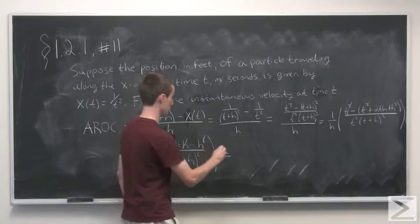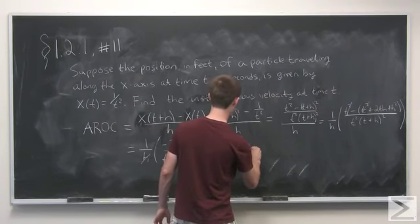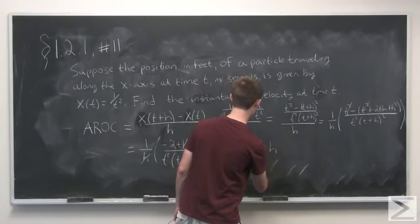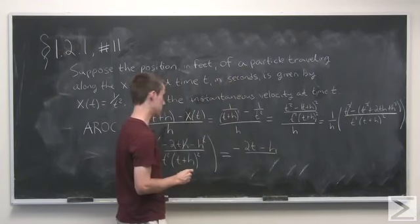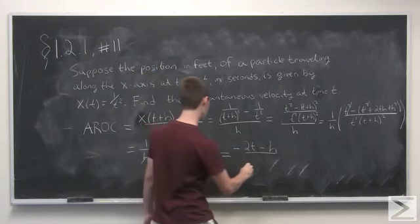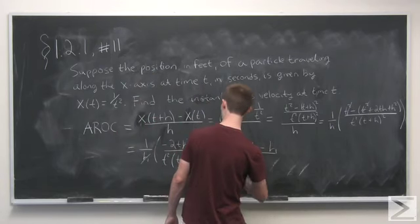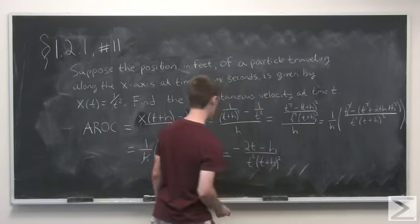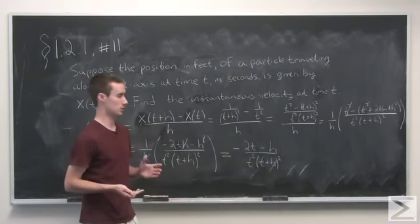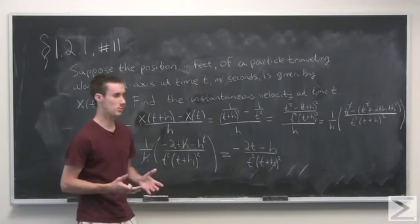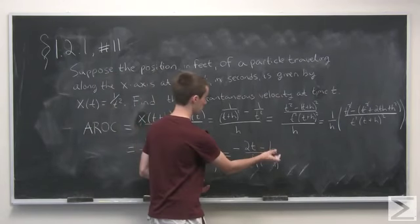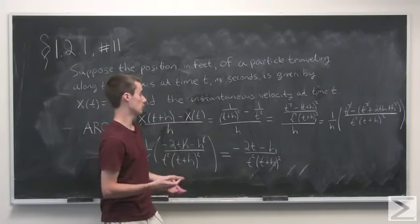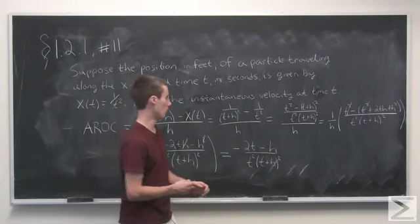So all this becomes minus 2t minus h all over t squared times (t plus h) squared. And it's clear if we start letting h become smaller and smaller, this term is going to go to 0, and the denominator is going to go to t squared times t squared, or t to the 4th.